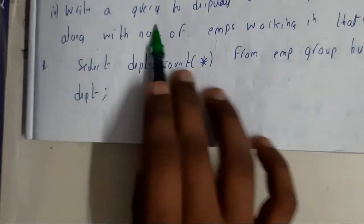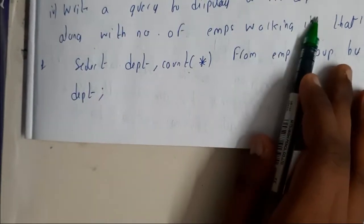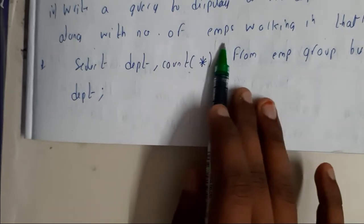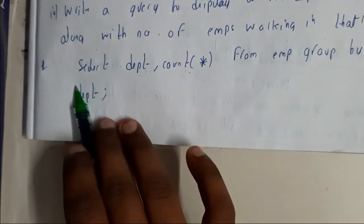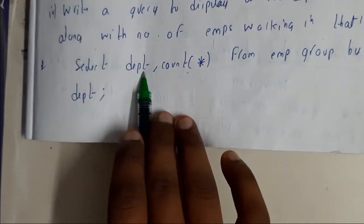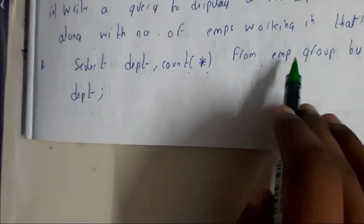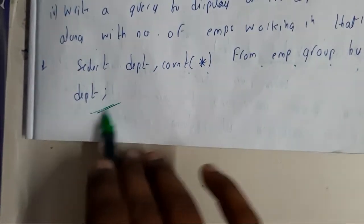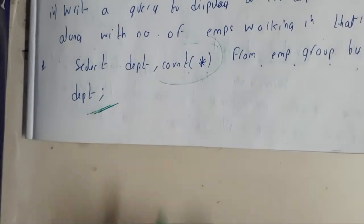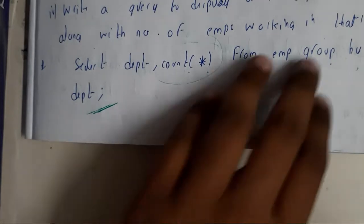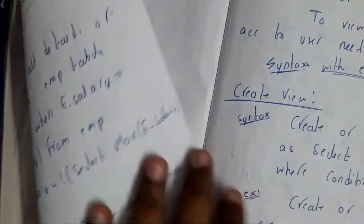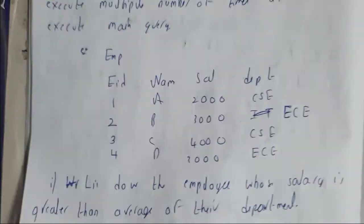Write a query to display all the department names along with the number of employees who are working in that department. SELECT Department, COUNT(*) FROM Emp GROUP BY Department. Here COUNT(*) is used for counting the number of employees, and we are grouping them with respect to the department number.